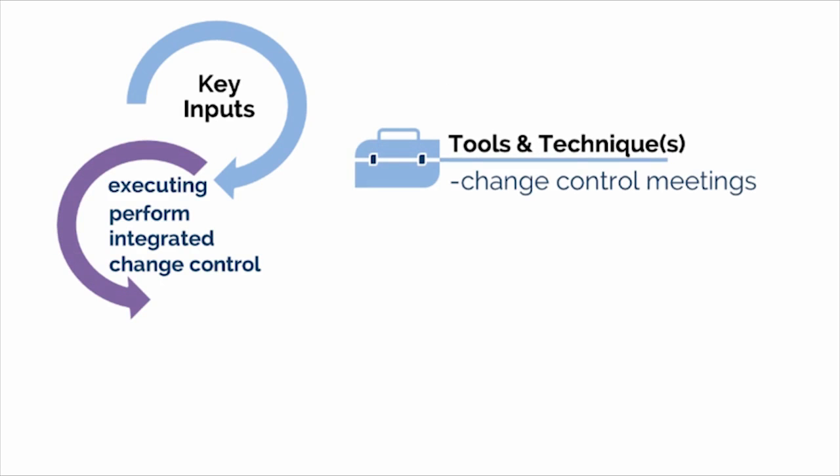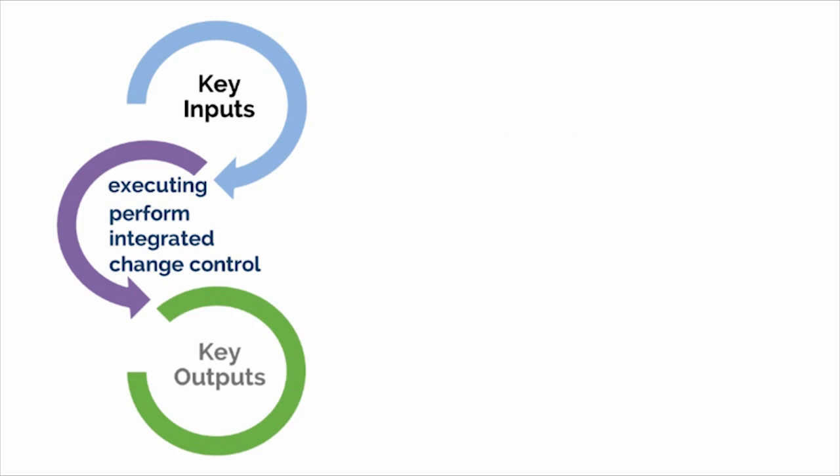A key tool and technique is change control meetings, whereby clear procedures and guidelines are established, and the Board will review all submitted change requests and determine which ones are approved or rejected. The key output of this process is change request status updates, whereby the team can take action on the approved change requests.